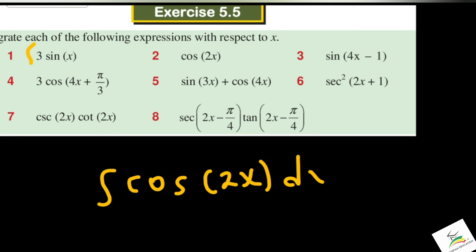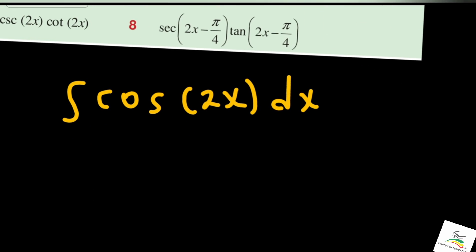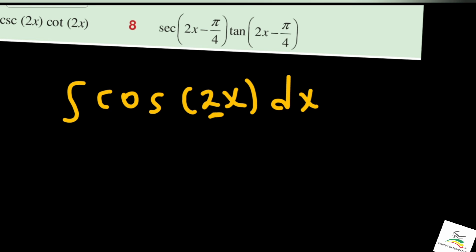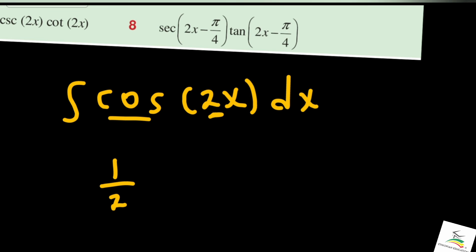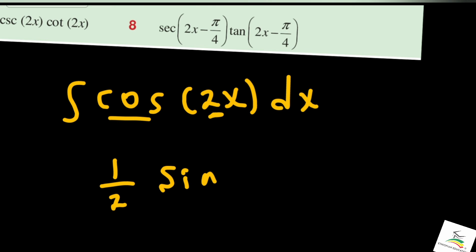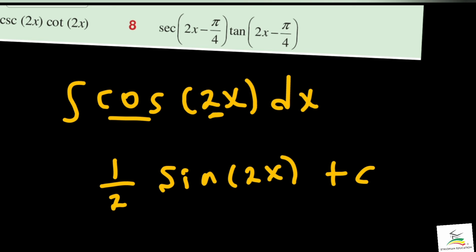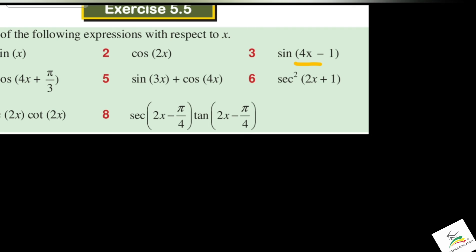Integration of cos 2x by dx: the x coefficient is 2, so 1 over 2 times — cos integrates to sin — giving (1/2) sin 2x plus C.